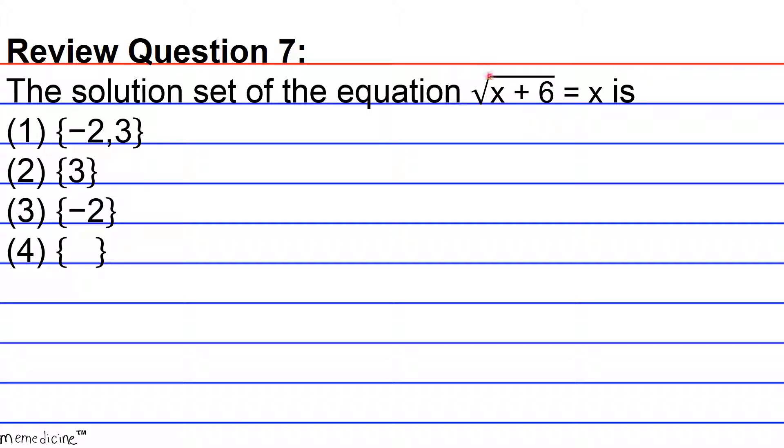So to undo an index of 2 we would have to raise this radical to an exponent of 2 or square it, thus unlocking the radicand expression underneath the radical sign. And if we square the left hand side of the equation we also have to square the right hand side of the equation.